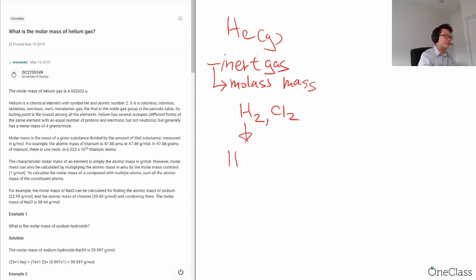So again, for H2 we have two hydrogen combined together to form H2. Same for chlorine. Because if they form a diatomic molecule, it will be easier, much more stable and easier for them to exist.